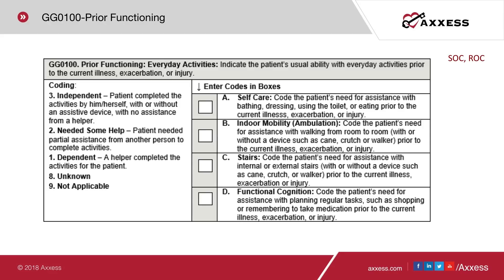Code 09, which is not applicable, is used if the activity was not applicable to the patient prior to their current illness, exacerbation, or injury. For example, Medicare mentions stairs — code not applicable if the client never used stairs prior to this episode. The dash, indicating no information is available, is a valid but expected rare response. We should be able to ascertain from the patient or caregiver what the patient's prior functioning status was.